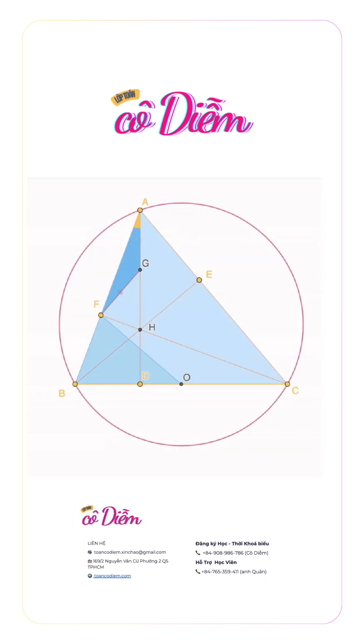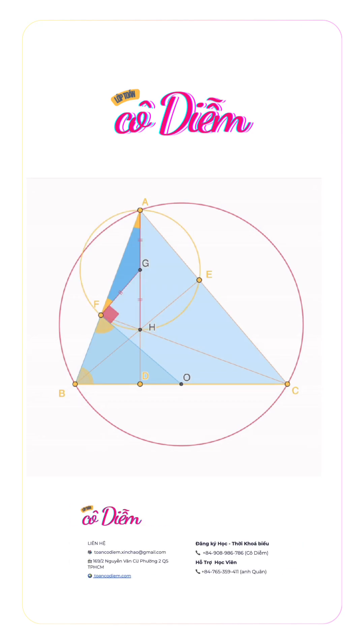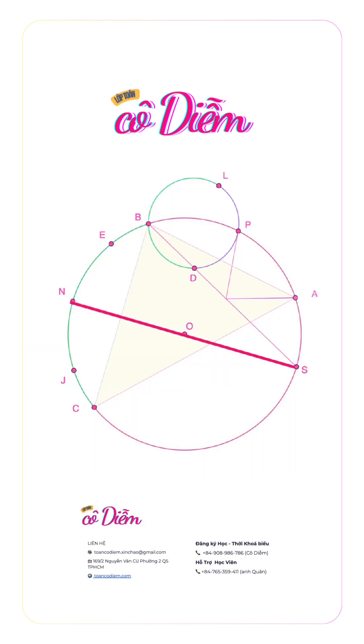Check the description for the proof. Back to our problem. First step: we construct auxiliary objects.